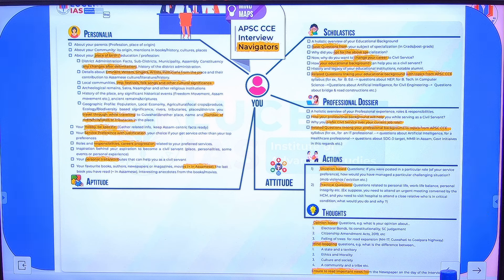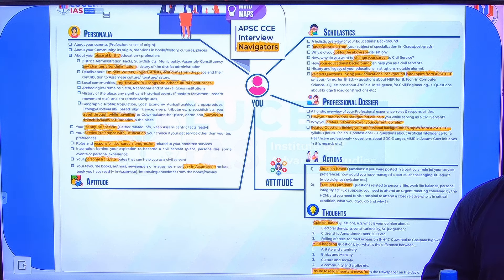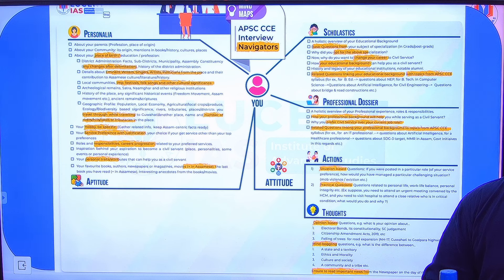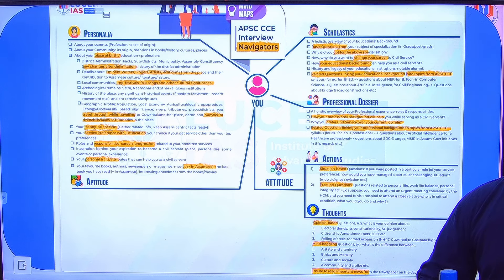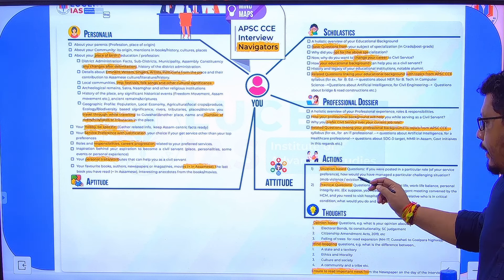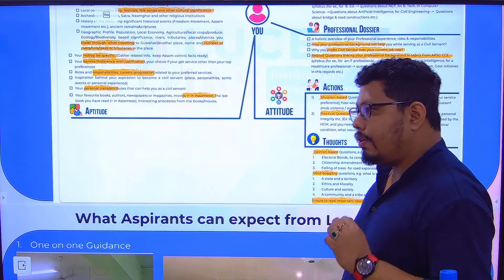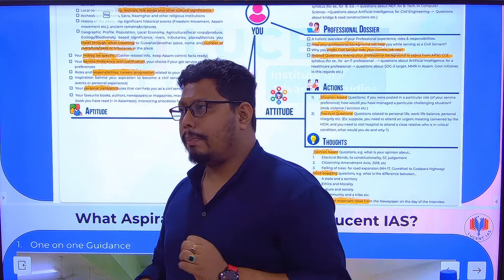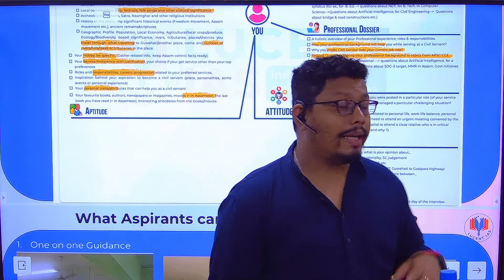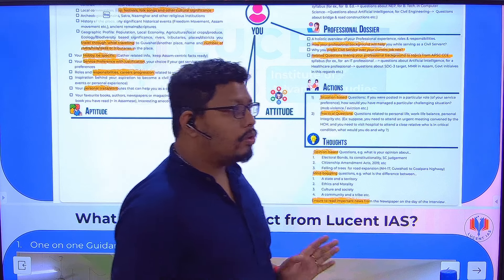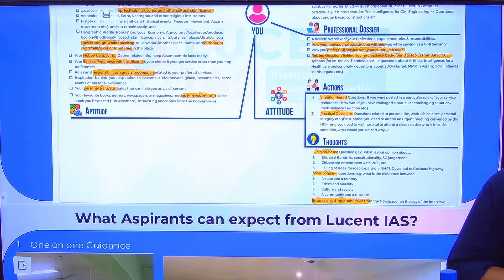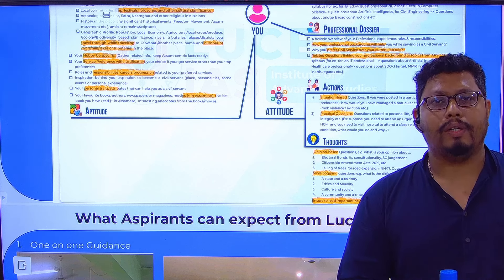Regarding professional background: one IT candidate with a software background mentioned programming as his hobby, and cross-questions followed on how complex activities like programming can be someone's hobby. Situation-based questions are among the most important — for example: 'If you were a Circle Officer during a certain incident, what would you do?' or 'If you were the DSP at a police station facing an attack, how would you handle it?'